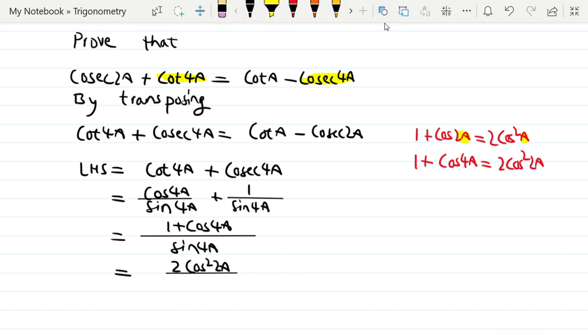The denominator is sin4A. We break it down to 2 times 2A. Sin4A is 2sinA·cosA. Let me break this down to 2 times 2A. Sin4A equals 2sin2A·cos2A, so sin4A is 2sin2A·cos2A.